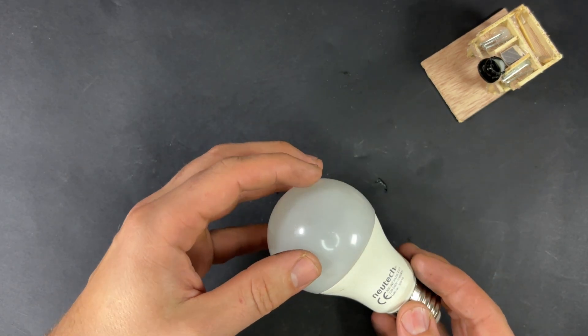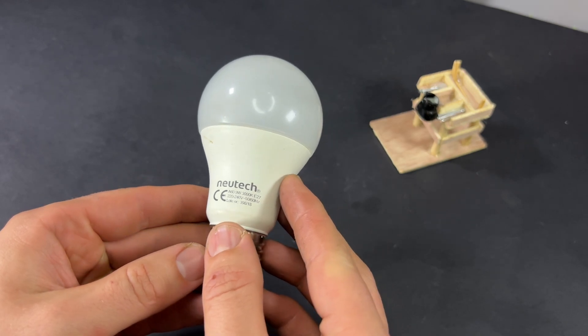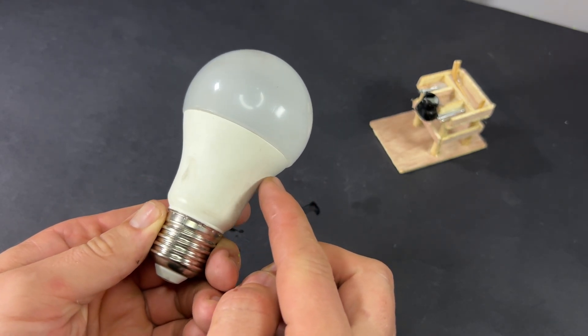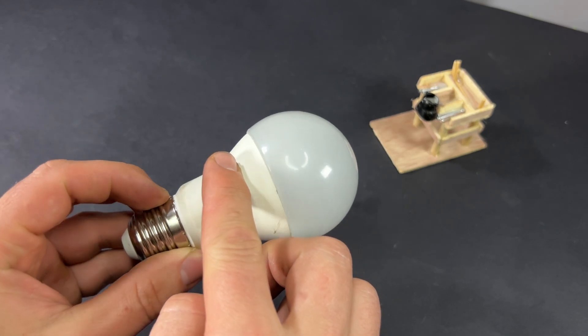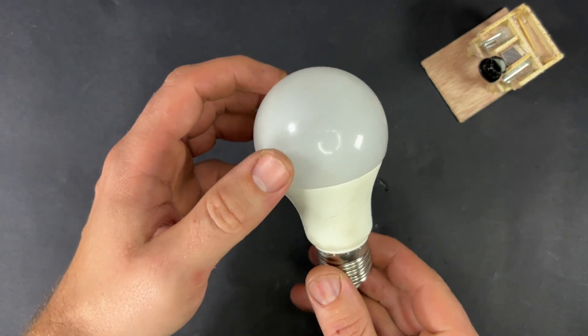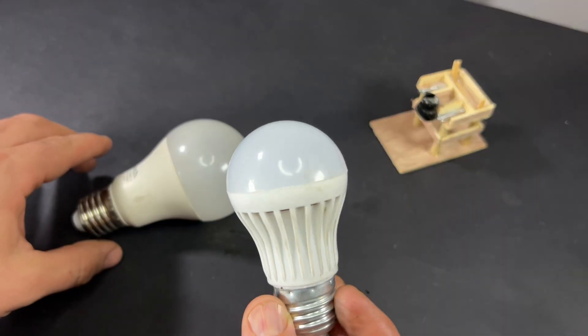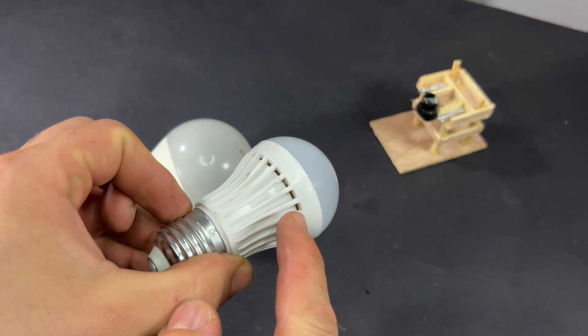So here's the problem: LED bulbs often overheat, causing them to burn out much sooner than expected. Even the ones that promise years of use sometimes fail after just a few months. Why? Because most cheaper bulbs lack proper ventilation. But don't worry, fixing this is easier than you think.